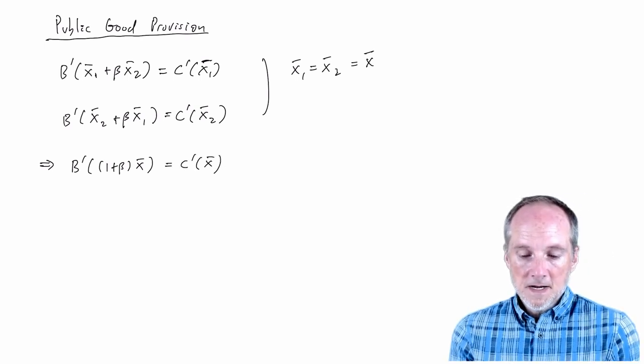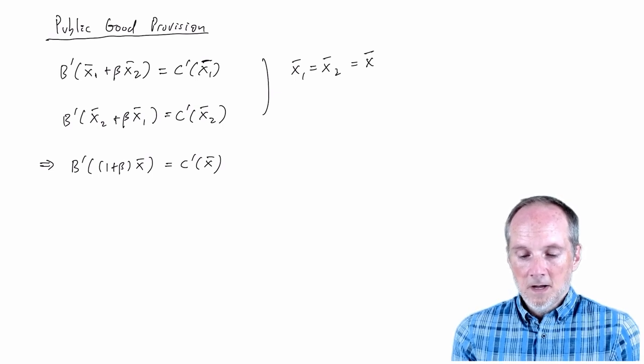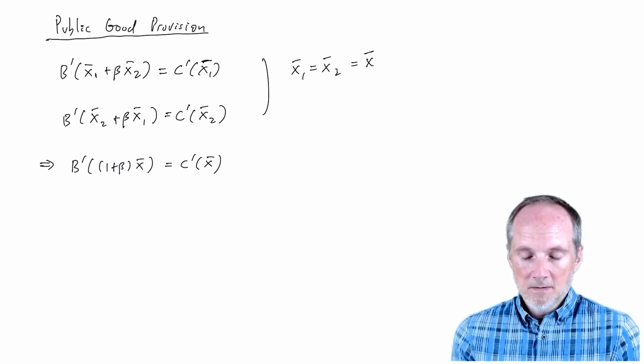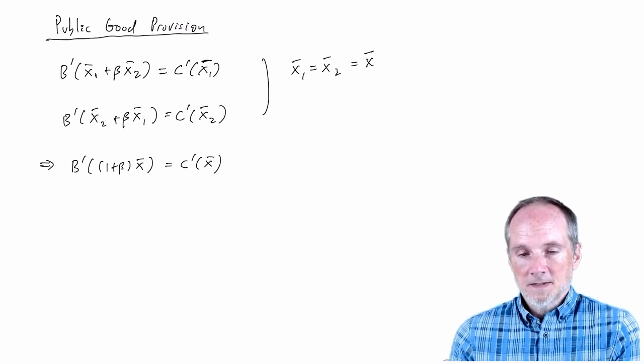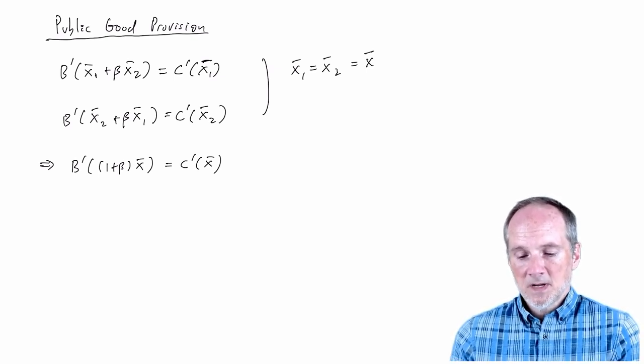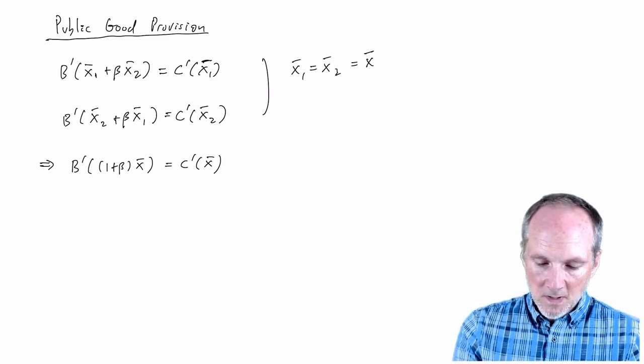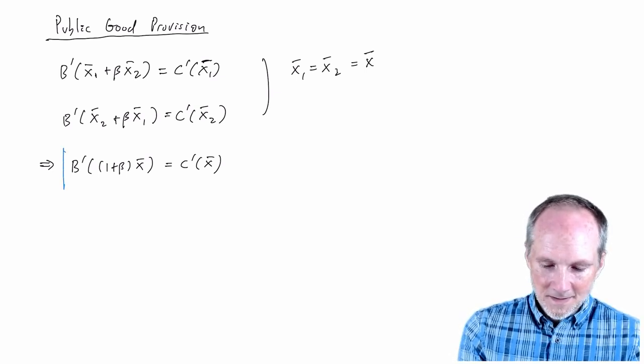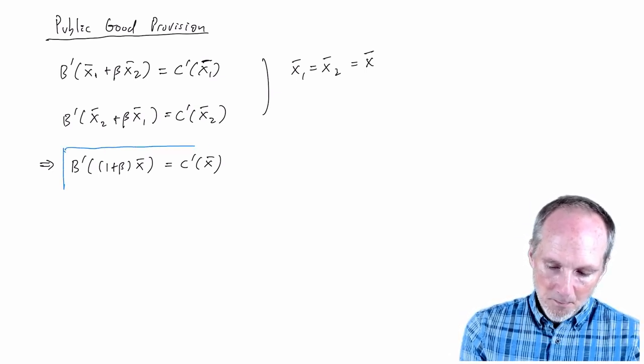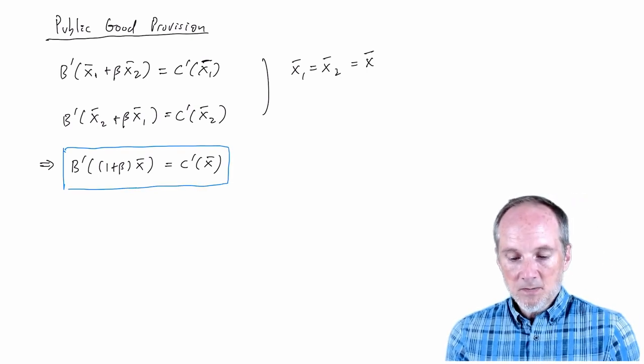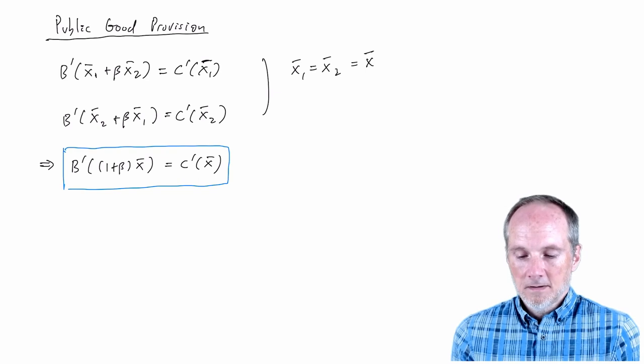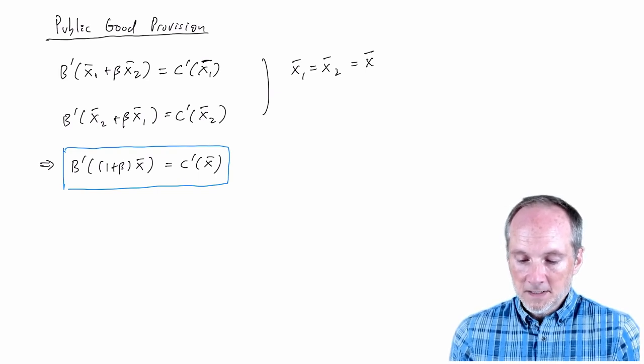So that means that this first order condition reduces to the following. In fact, I'll just pull out this one plus beta. And the second first order condition reduces to the same expression. So really, we've just argued that that system of two equations and two unknowns can be collapsed to a system of just one equation and one unknown, and that equation characterizes that equilibrium activity level.